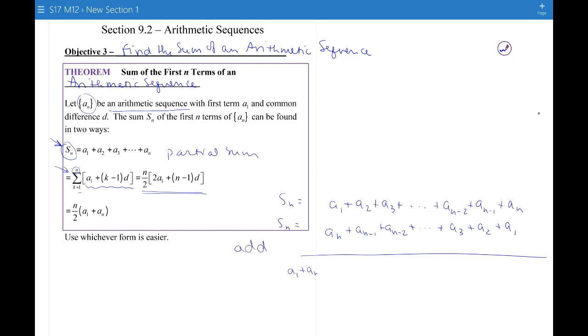I'm going to get a sub 1 plus a sub n plus a sub 2 plus a sub n minus 1 plus and so on. And look how here at the end I get a sub n plus a sub 1. Oh, this is that same idea as what we did before where a sub 1 plus a sub n is a sub 1 plus n minus 1 d, right?